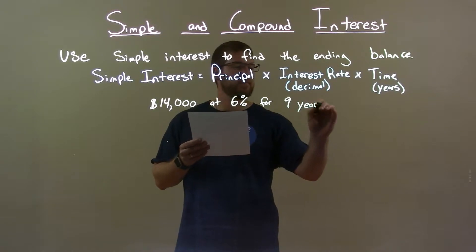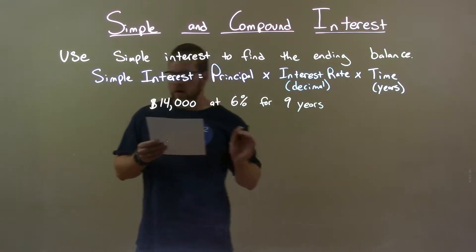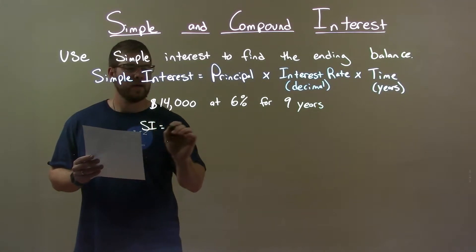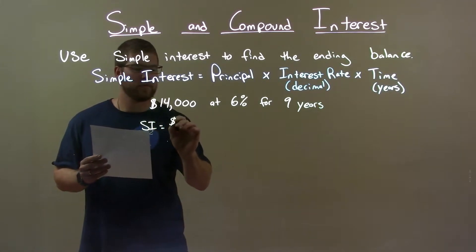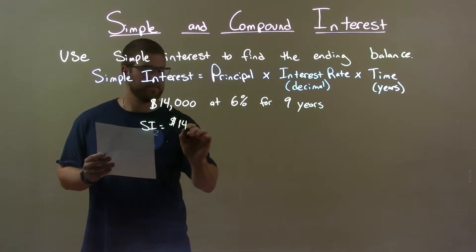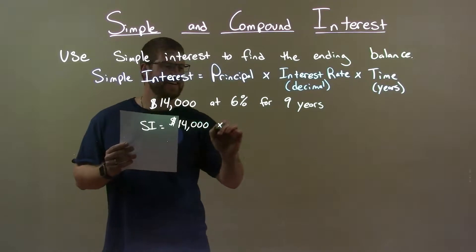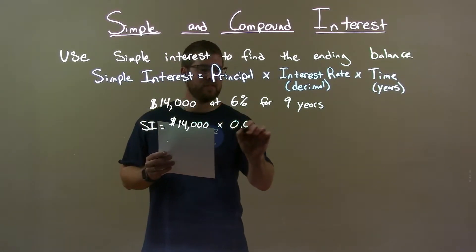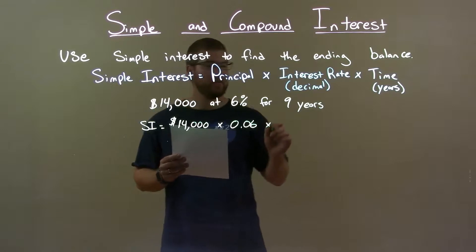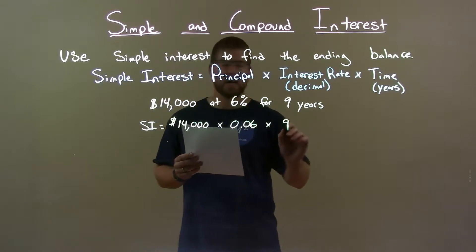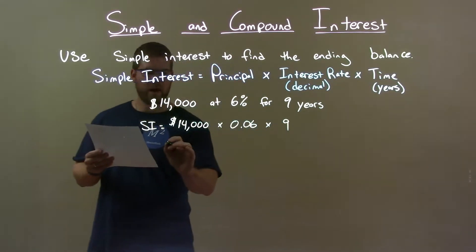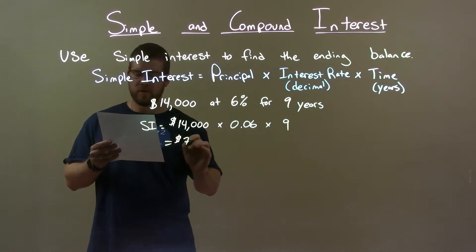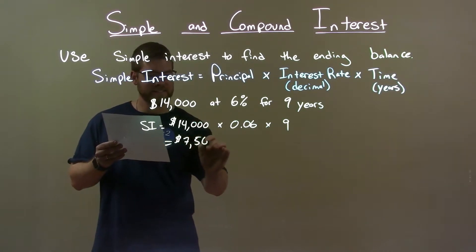I first want to use my simple interest formula. Simple interest equals my principal, $14,000, times my interest rate as a decimal, 0.06, times the amount of years, which is nine years. This gives me a value of $7,560.